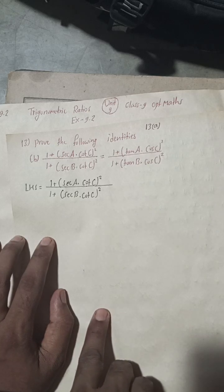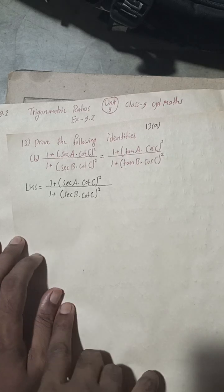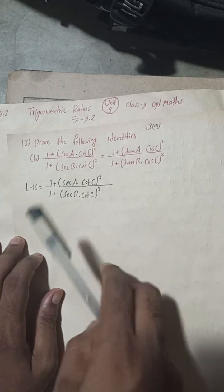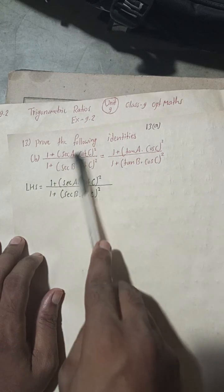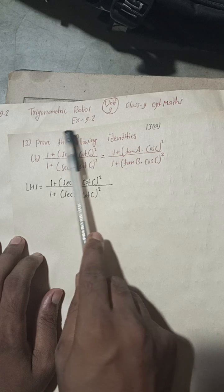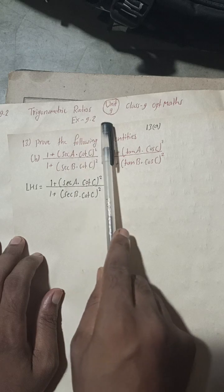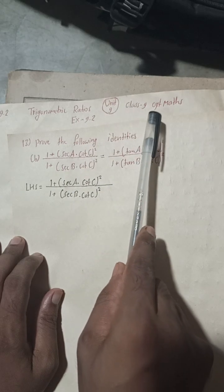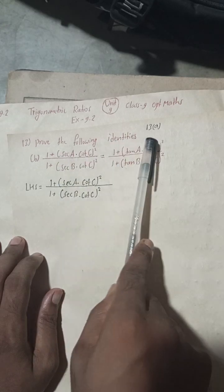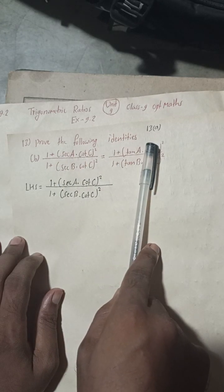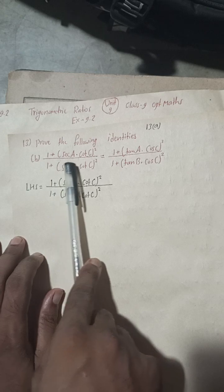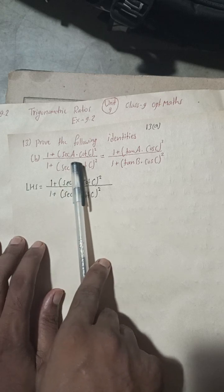Hi everybody, welcome back to Bimalsarji YouTube channel. This is question number 13 of exercise 9.2, trigonometric ratios, unit 9, class 9 OPT maths. 13A is already uploaded — you can check the playlist. Now we have 13B.